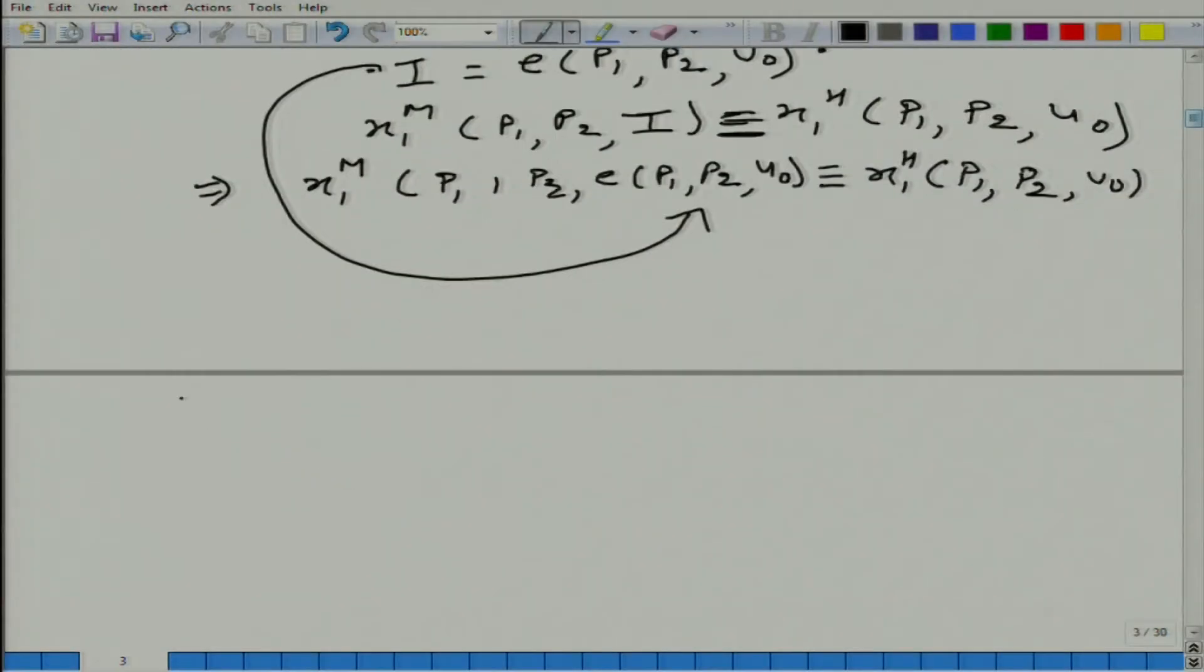Now, before I proceed further, let me talk about this M and H. M represents Marshall and H represents Hicks. These two names are very big names in economics, in microeconomics: Alfred Marshall and Hicks.